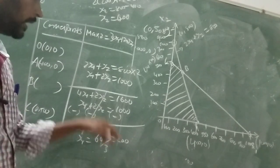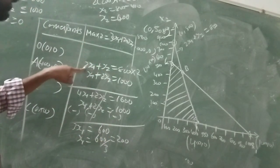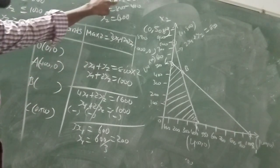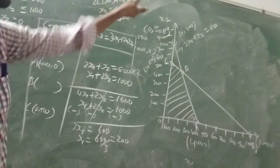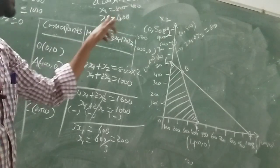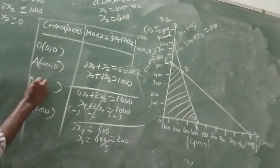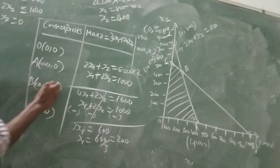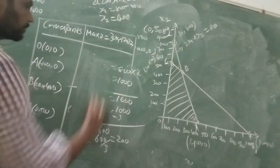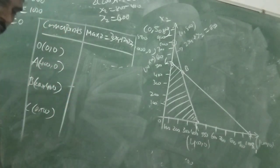x1 equal to 200. Substitute into the first equation: 2 into 200 plus x2 equal to 800. x2 equal to 800 minus 400, so x2 equal to 400. Therefore B is (200, 400).